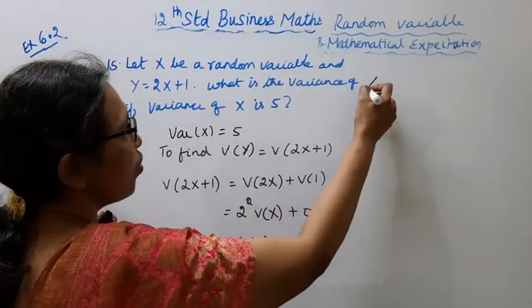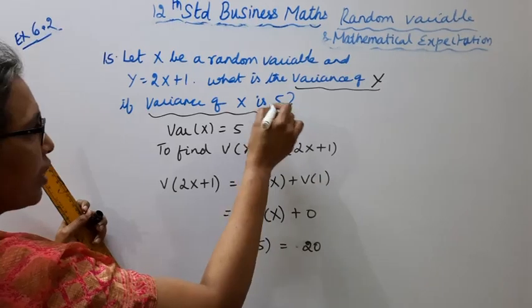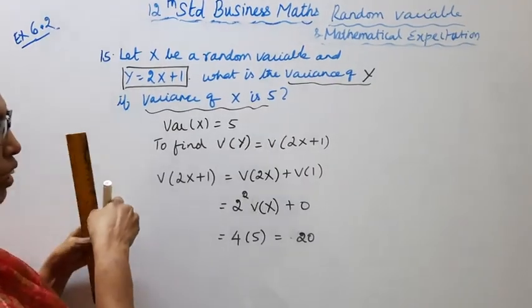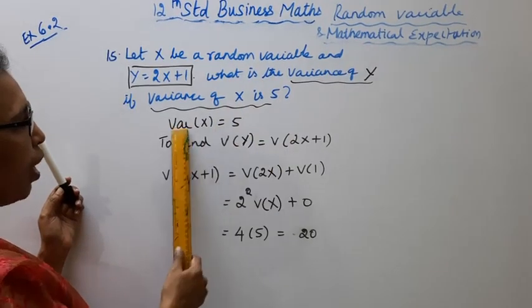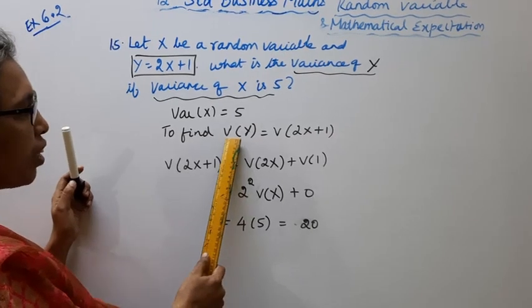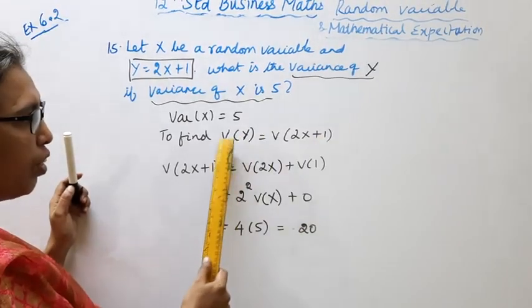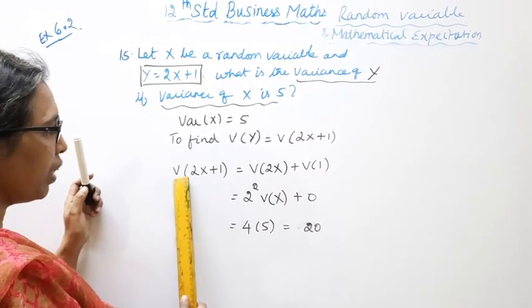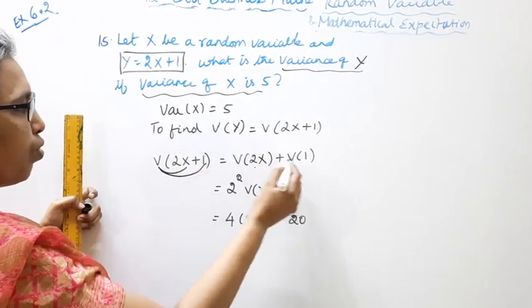In the case of variance of y, to find variance of y, y is equal to 2x plus 1. Variance of 2x plus 1 is equal to variance of 2x plus variance of 1.